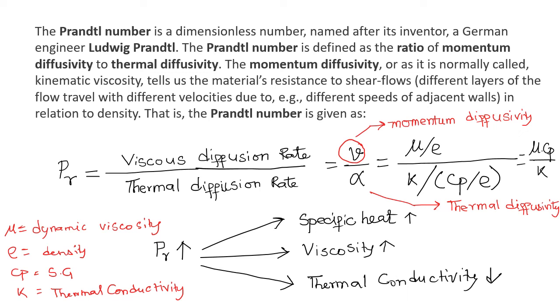We can see that Prandtl number increases with the specific heat and viscosity and decreases with the thermal conductivity. As the thermal conductivity of the fluid decreases, the Pr increases. So, we want less Pr for thermal mass flow meter design.